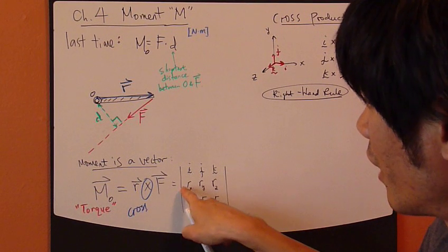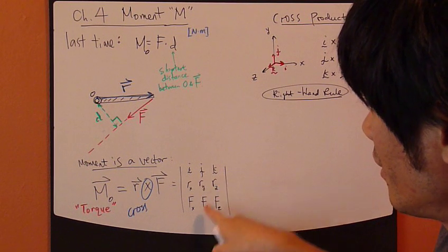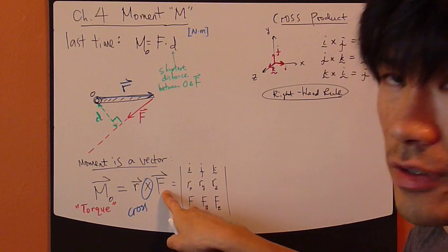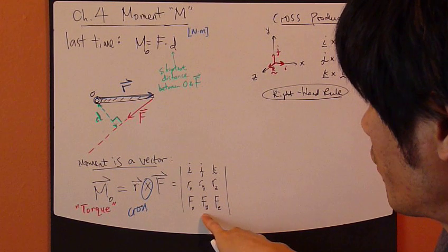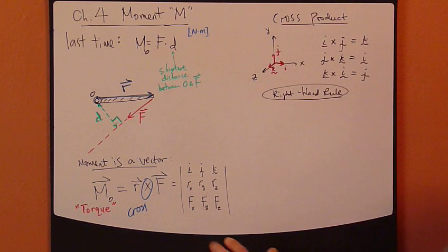This last row, component of force vector, so that's actually, I find, that's Z.